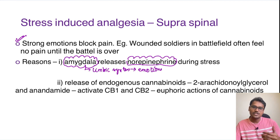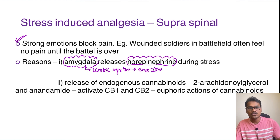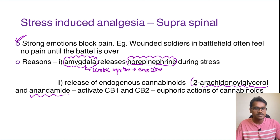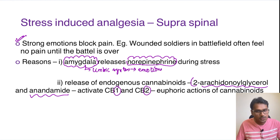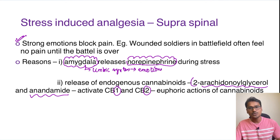Due to strong emotion, the amygdala releases norepinephrine, which reduces pain transmission by acting at the spinal cord level. There is also release of endogenous cannabinoids, known for their euphoric actions. The two substances released are 2-arachidonoyl glycerol (2-AG) and anandamide. These act on cannabinoid receptor 1 and cannabinoid receptor 2 to produce euphoric effects. This mechanism is called stress-induced analgesia. In the next lecture we will study referred pain — thank you for listening, please drop a like and share.